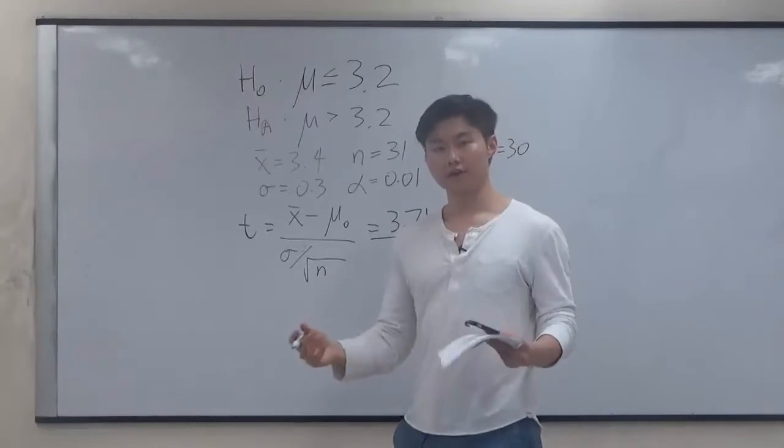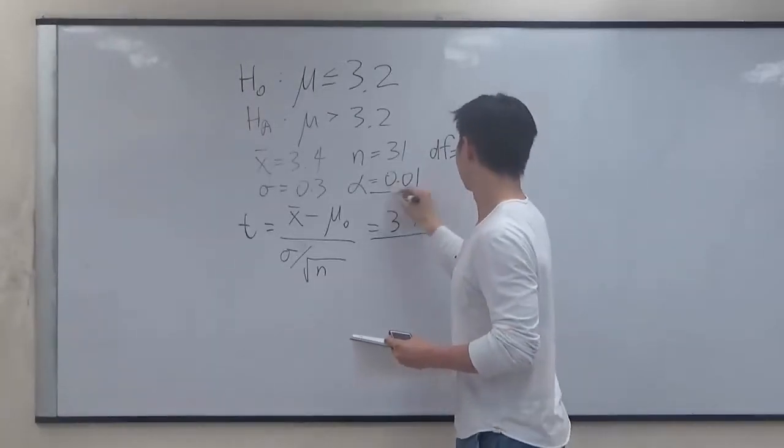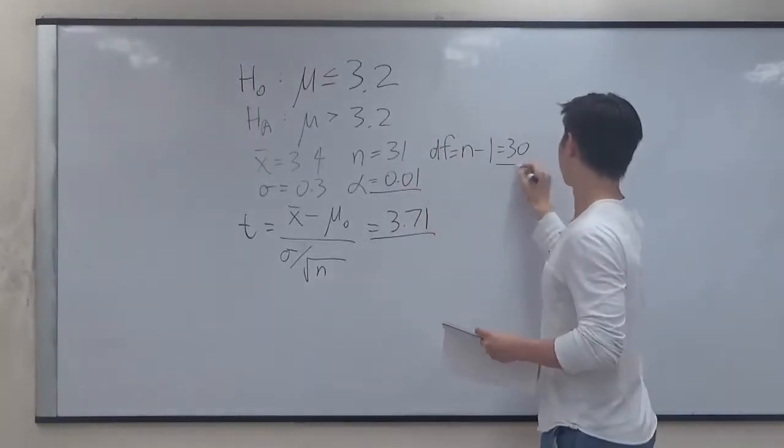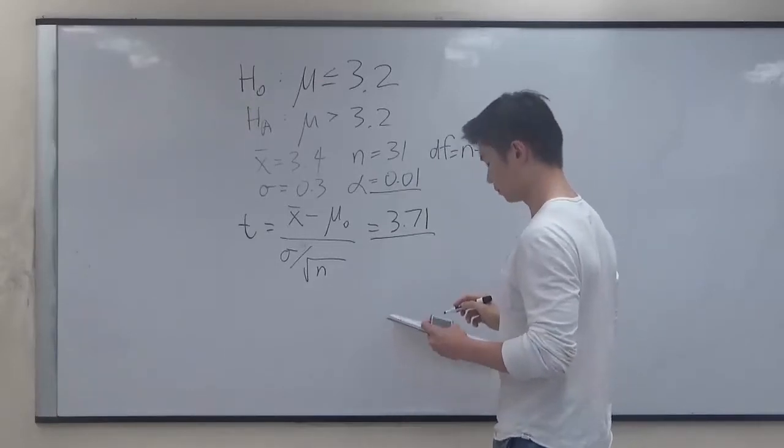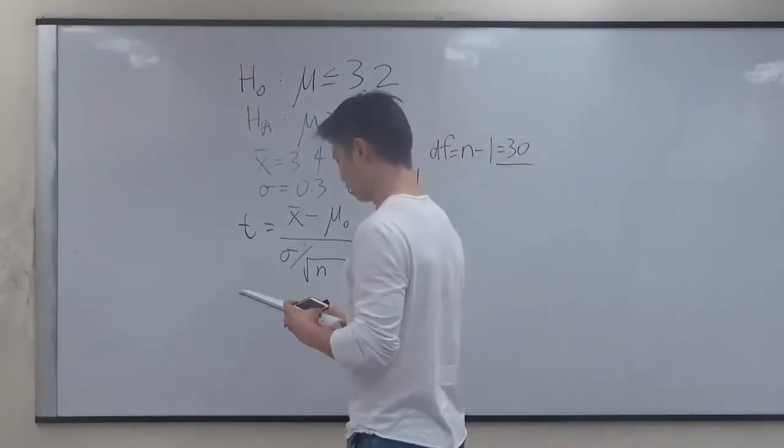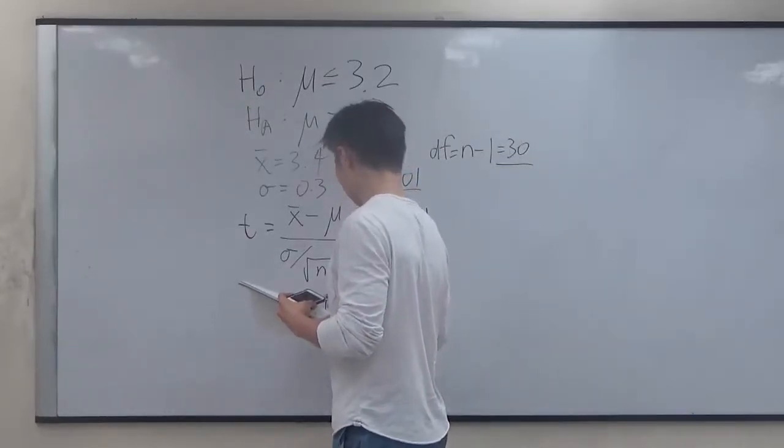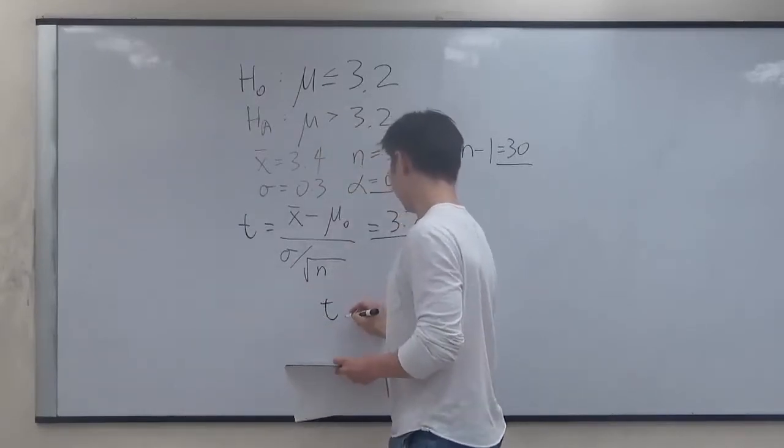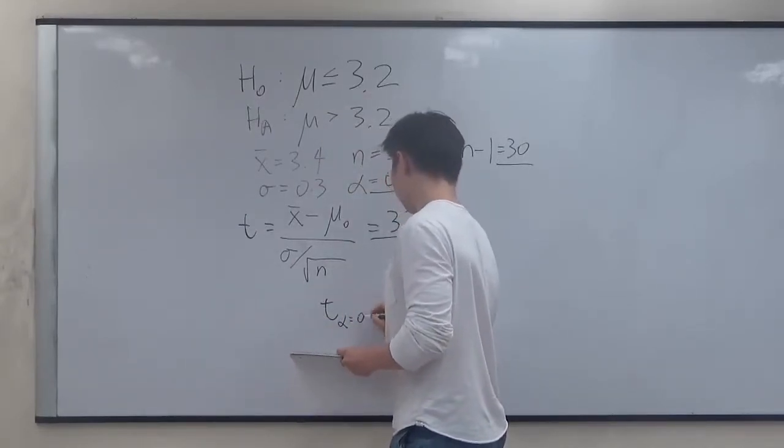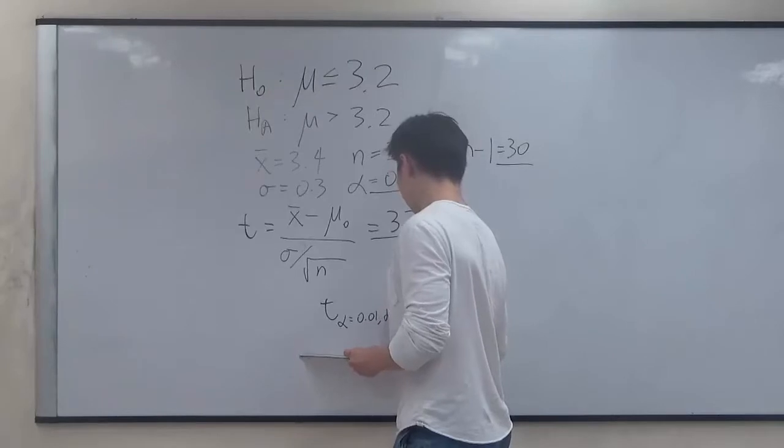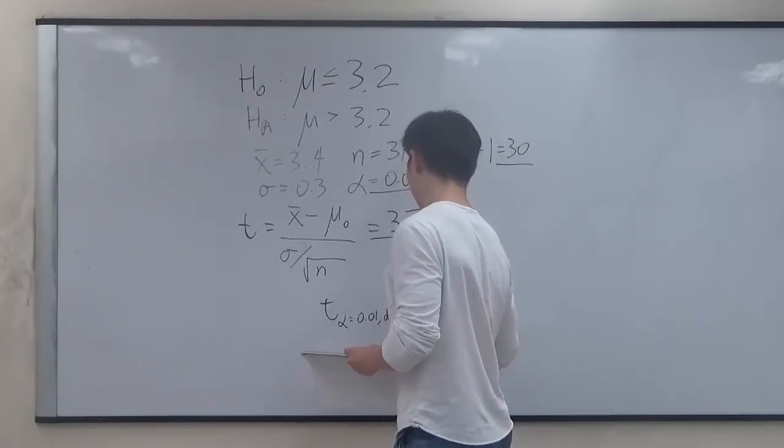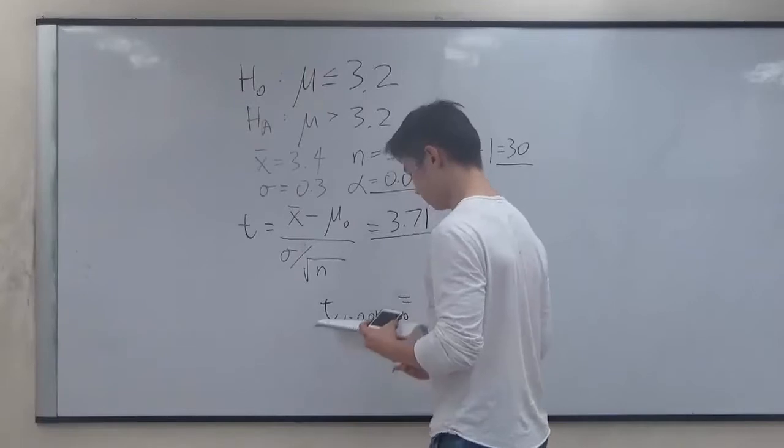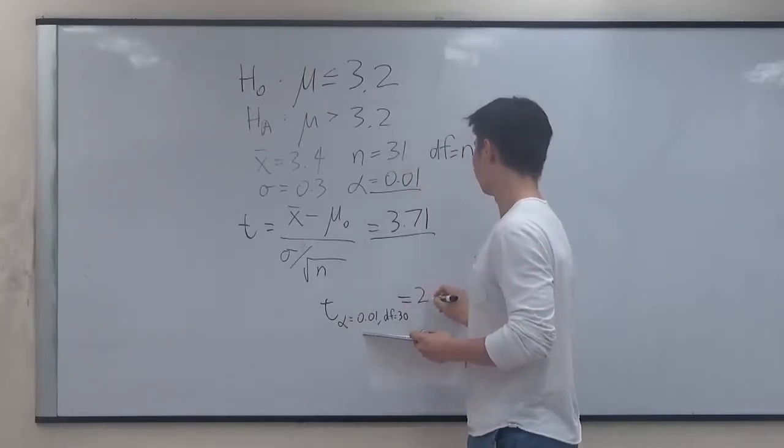Now, once we look at our t-table for this significance level and this degree of freedom, we get that t of alpha equals 0.01, and the degrees of freedom of 30, is equal to 2.457.